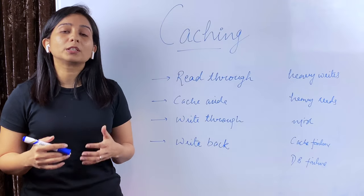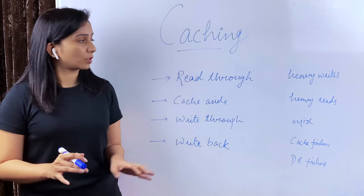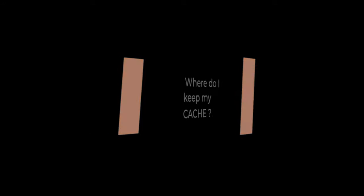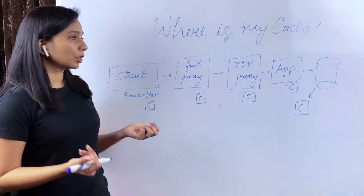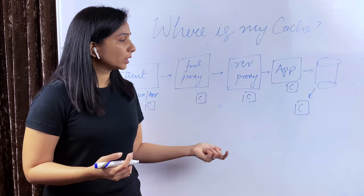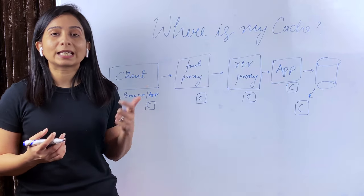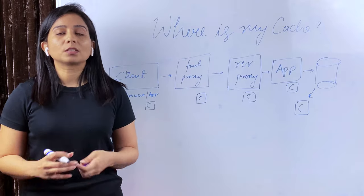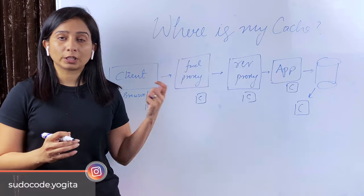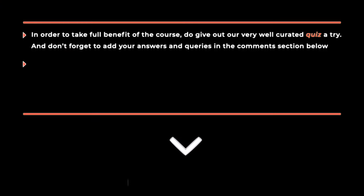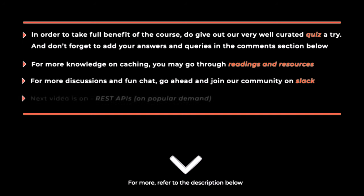If you want to go into further details, I have included links in the description. If you have questions about any of the patterns, feel free to comment and join the Slack community. Last but not least, where can you keep your cache? Caching can happen at the browser level, proxy level, application level, outside the application using cache-aside with the DB, and so on. Depending on your requirements, your cache can sit at any or all of these components. Let me know what you liked or didn't like about the video, and don't forget to check out the readings for different cache patterns in the description. Take care, see you in the next video.